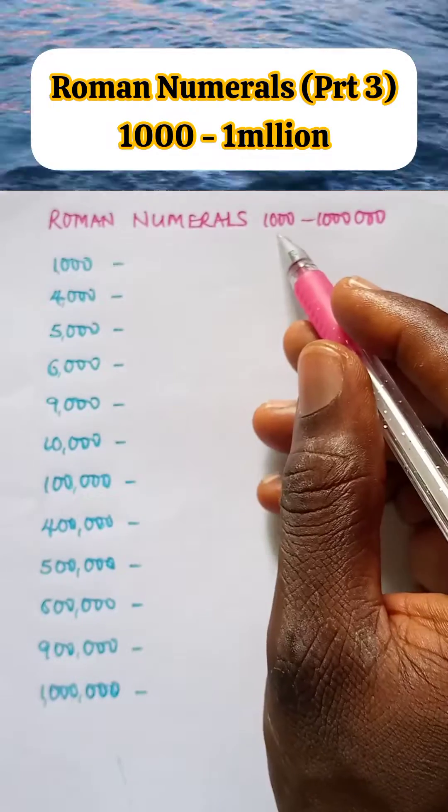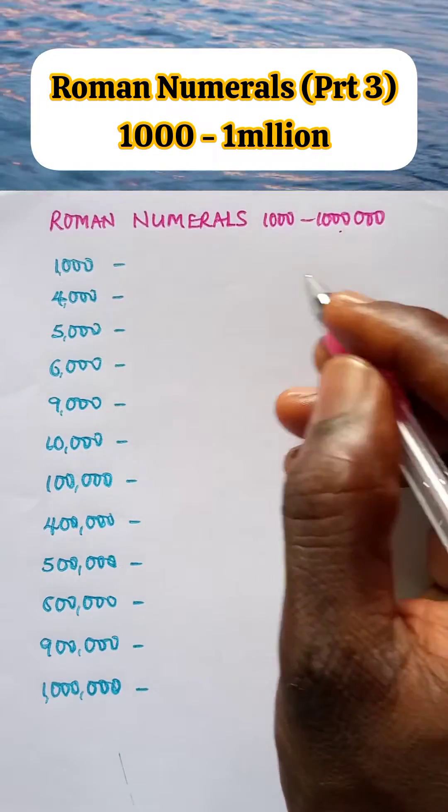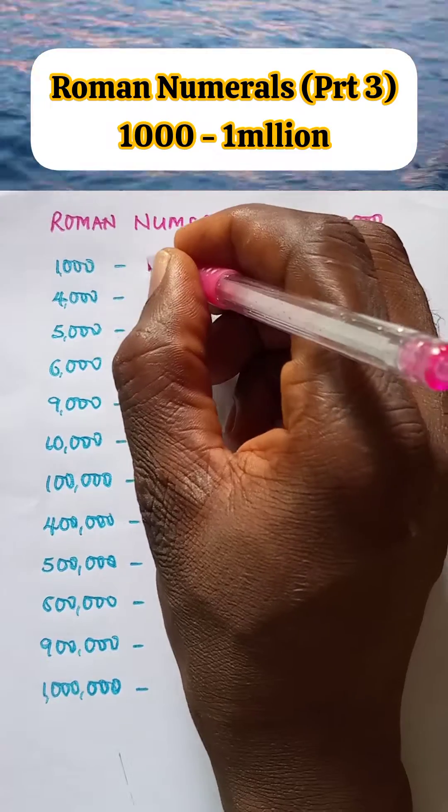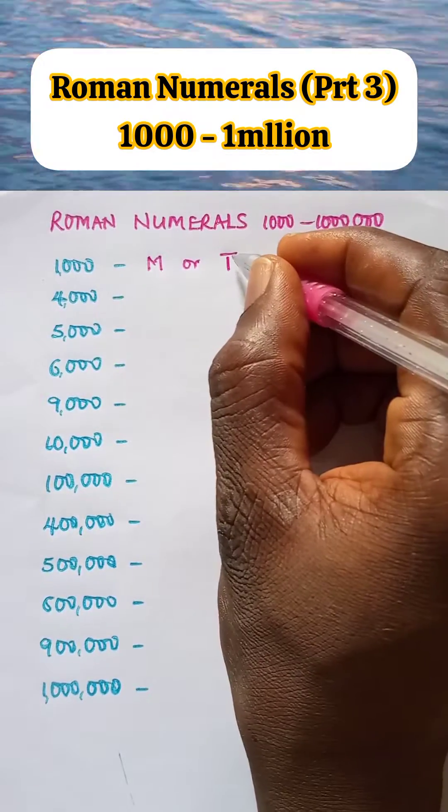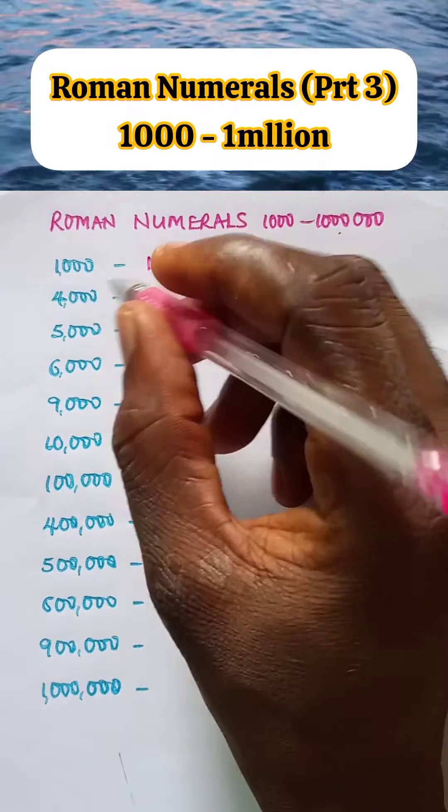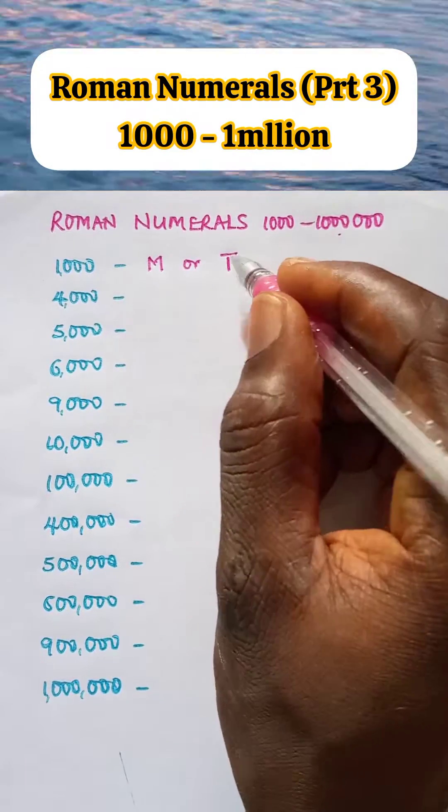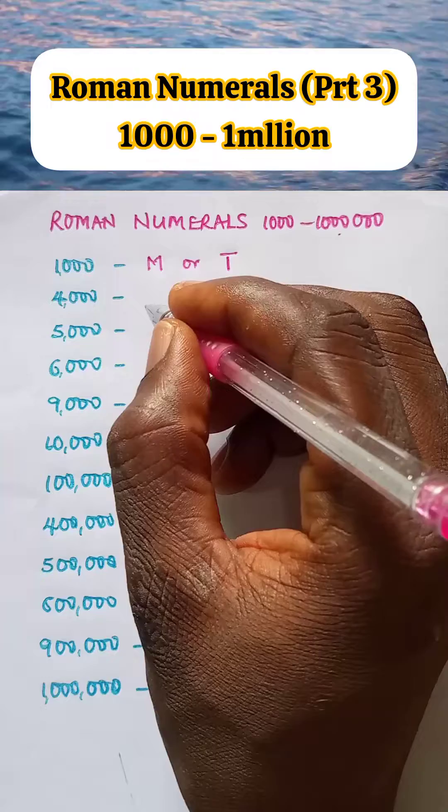Roman numerals part three, one thousand to one million. One thousand is written as M or I bar. A bar in Roman numerals means a thousand, so one thousand is M or I bar. For four thousand, first let's look at five thousand.